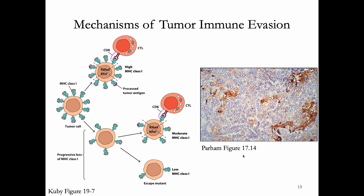If the tumor cell completely loses MHC class I, what's the problem? Now the cells that find them are NK cells. So losing MHC class I makes these cells susceptible to NK cell killing.